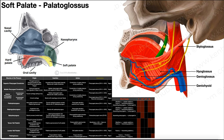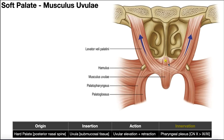The last muscles are those associated with the uvula — the musculus uvulae. Here you can see the levator veli palatini muscles, with tensor veli palatini behind them, and the pterygoid hamulus. Palatopharyngeus comes down here, and right here is the musculus uvulae. The origin is the hard palate — specifically the posterior nasal spine — and the insertion is the submucosal tissue of the uvula. The action of these muscles is to elevate and retract the uvula, particularly during speech and swallowing. They are innervated by the pharyngeal plexus, mostly cranial nerve 10.